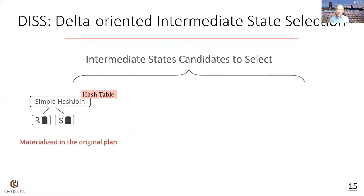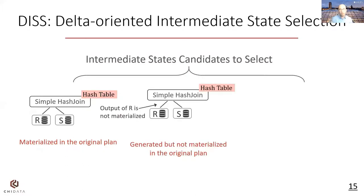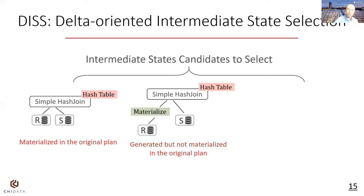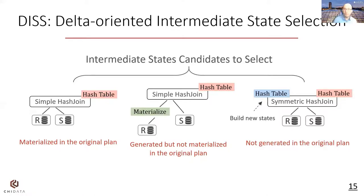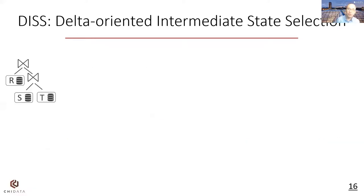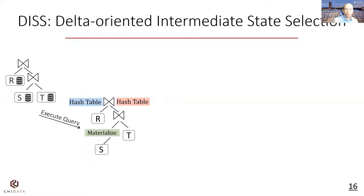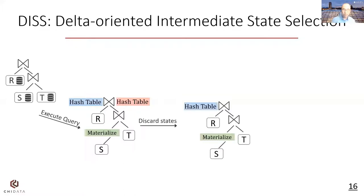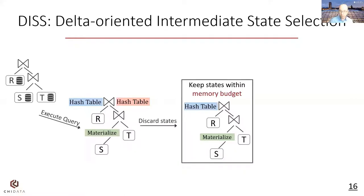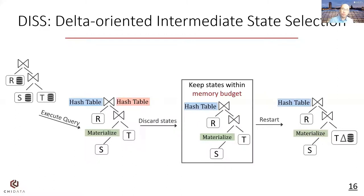Delta-oriented intermediate state selection considers three types of intermediate states. The first is those already materialized in the original plan, like the hash table for the hash join. We also find intermediate states that are output but not materialized, like the output from R, so we consider inserting a materialization operator to keep those. We additionally build new states not generated in the original plan. During query execution, while processing the current data, we additionally build some new states for future processing, like a new hash table. After the execution finishes, we discard some states within the memory budget. When new data arrives, we reuse those saved states to quickly process the delta data.